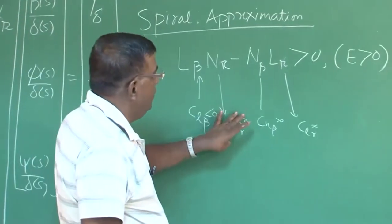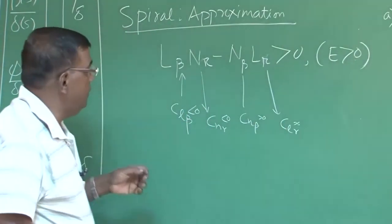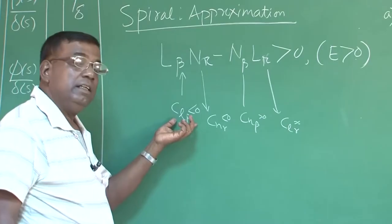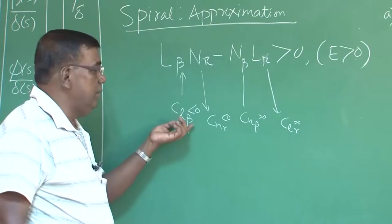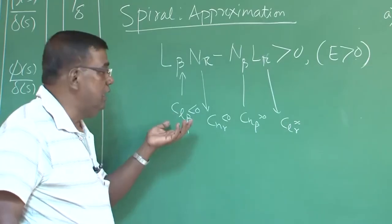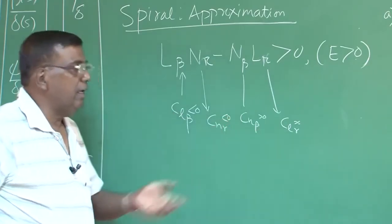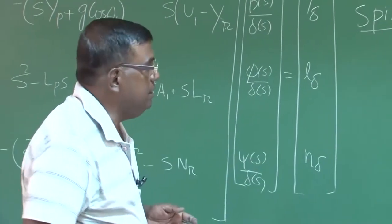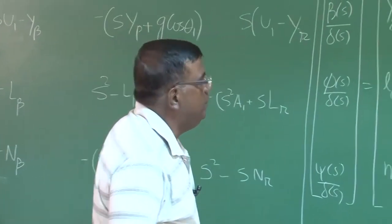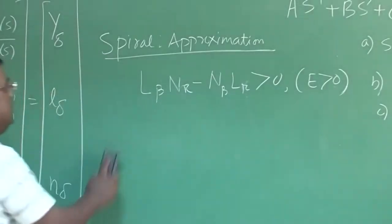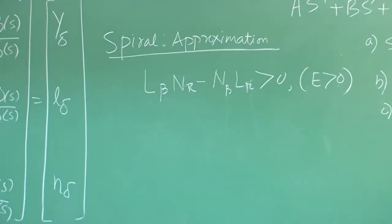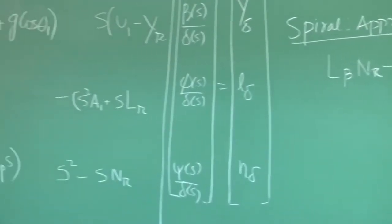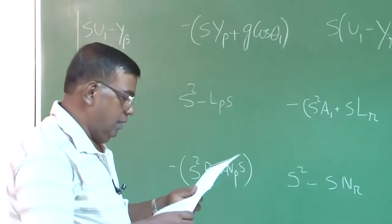We understand who the non-dimensional derivatives are and the role they play. For example, if I increase the vertical tail height, C_Lβ increases; if I make it a high-wing aircraft, C_Lβ increases in the negative sense. The designer must know: if I need to tweak a certain parameter, which geometric design parameters should I change? This should be very clear before we proceed to the spiral approximation, and again I caution that these approximations are generally not very good, but good enough to give designers a feel for basic design parameters.